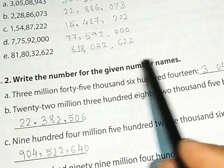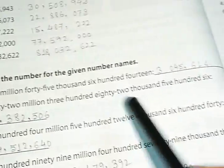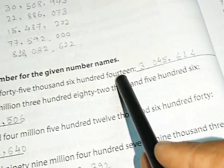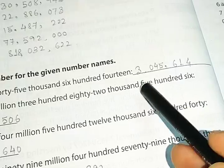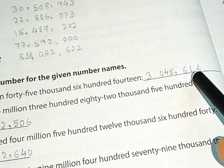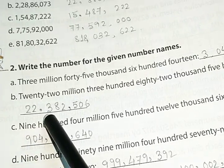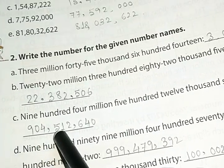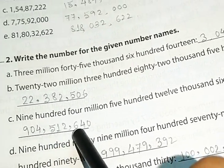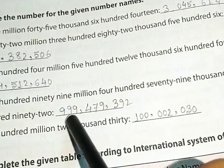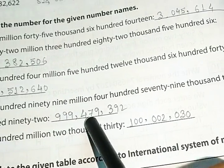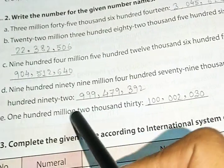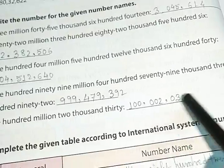Next, write the number for the given number names. So, there are some number names and you have to write that in numerical figure. The first answer is 3,045,614. Next one, 22,382,506. Third one, 904,512,640. Number D, 999,479,392. And the last one is 100,020,030.